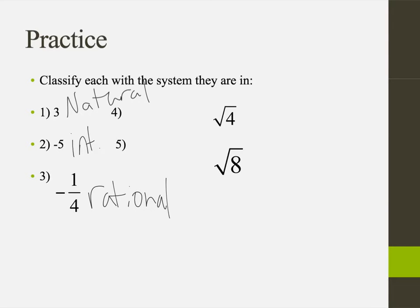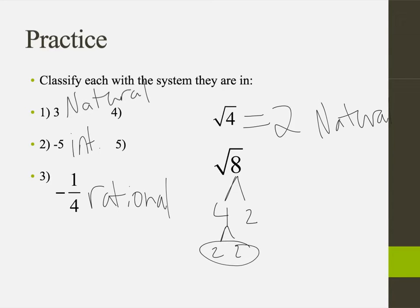Square root of 4 — normally we see this and think it's got to be irrational. But doesn't the square root of 4 equal 2? And 2 is a natural number. So yes, we do need to simplify if possible. For the square root of 8, if you do the prime factorization and take out the pairs, you get 2 root 2. And square root of 2 goes on forever and never repeats — so this is an irrational number. Square root of 8 simplifies to 2 root 2, so: irrational.